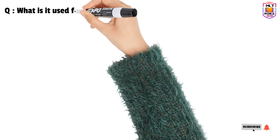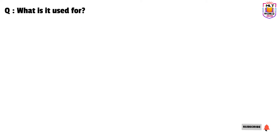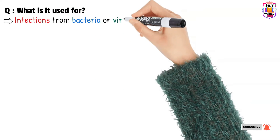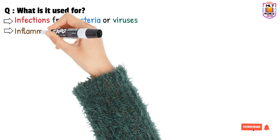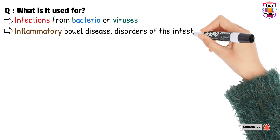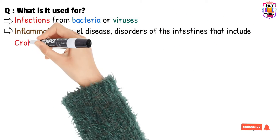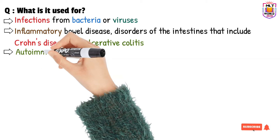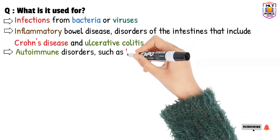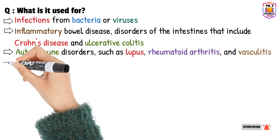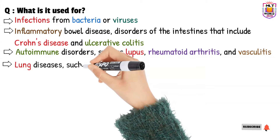The next question is: what is the CRP test used for? The CRP test may be used to help find or monitor inflammation in acute and chronic conditions, including infections from bacteria or viruses, inflammatory bowel disease such as Crohn's disease and ulcerative colitis, autoimmune disorders such as lupus, rheumatoid arthritis, and vasculitis, and lung diseases such as asthma.